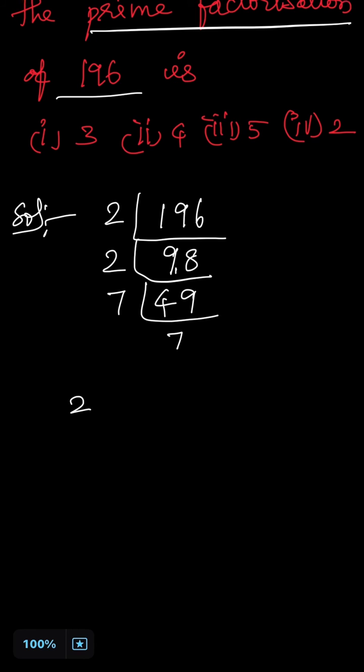It can be written as 2 power 2 multiplied with 7 power 2 is equal to 196.